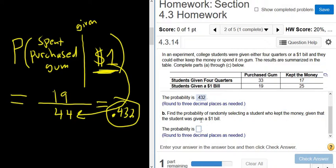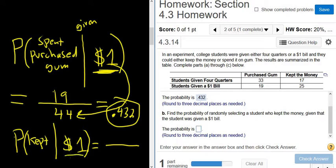All right. Find the probability of selecting a student who kept the money given that the student was given a one dollar bill. All right. Let's write it again. So P. Parentheses. And it says kept. So kept the money given that they were given a one dollar bill. So kept the money given that they were given a one dollar bill. And again, we're focusing on the students who were given a one dollar bill. So that's the number that goes in the bottom. So adding across students given a one dollar bill, you get 44.